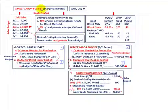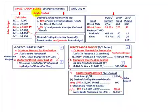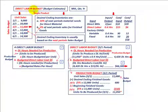Now we'll calculate our direct labor budget. These are based on budgeted estimates, and we'll look at it in terms of a single product — though you'd go through all products to determine the total direct labor budget. We're also looking at just a single month, March, though you'd calculate all months of the year for the total direct labor budget.